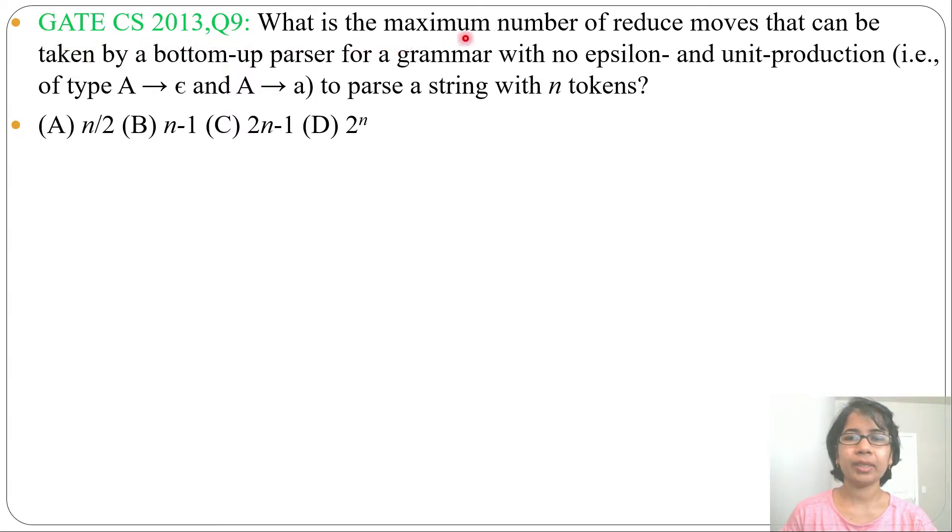It is asking what is the maximum number of reduce moves that can be taken by a bottom-up parser for a grammar with no epsilon and unit production to parse a string with n tokens.